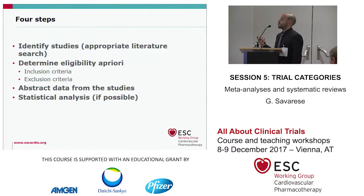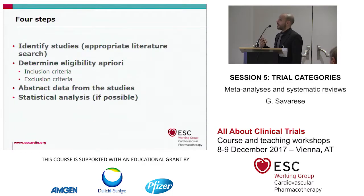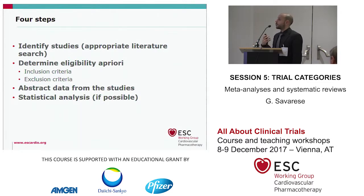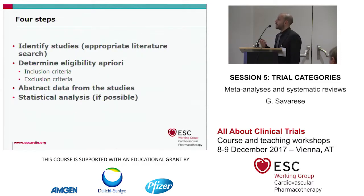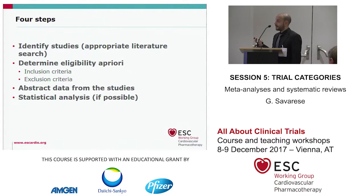There are four steps. First, we establish our hypothesis, and then we have to identify all the studies that evaluated that kind of hypothesis in the literature. Then we have to define the inclusion and exclusion criteria as we do for all different kinds of studies, and then we have to abstract data from the studies we want to include in the systematic review or in the meta-analysis, and then if it's possible, to analytically summarize the data by a meta-analysis.